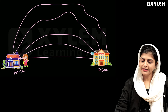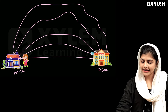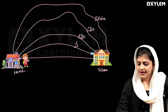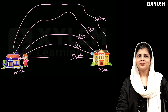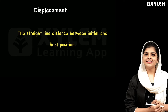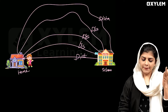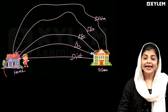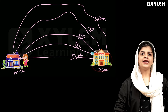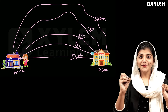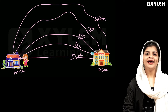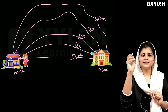This is the distance between the initial and the final position — that is the straight-line distance. This is called displacement. What is the difference between displacement and distance?